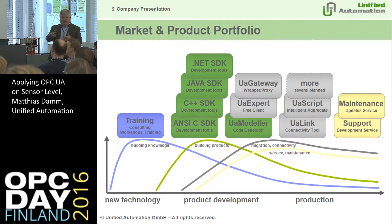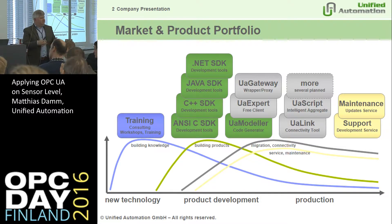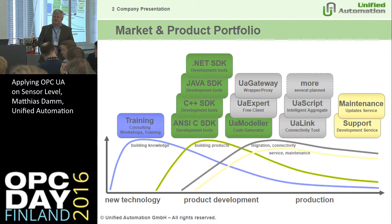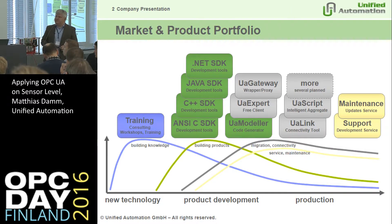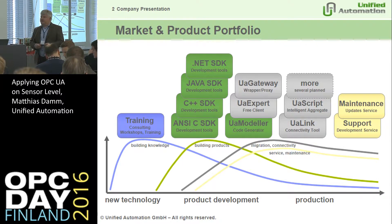As mentioned in a previous presentation, there's a transition phase with a lot of installed base for classic OPC. We have tools like UA Gateway to translate between classic OPC and OPC UA in both directions. UA Expert is a heavily used test tool to verify installed servers and is also used by developers. UA Modeler is used by many working groups for creating information models and companion specifications, and its main purpose is to generate code from these models so you can compile directly with the SDK.